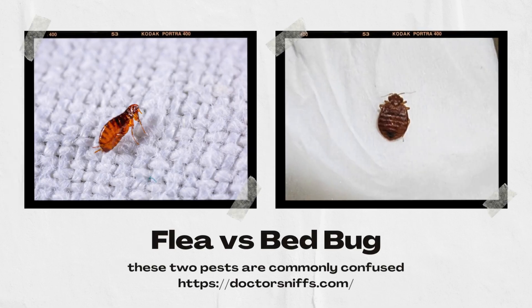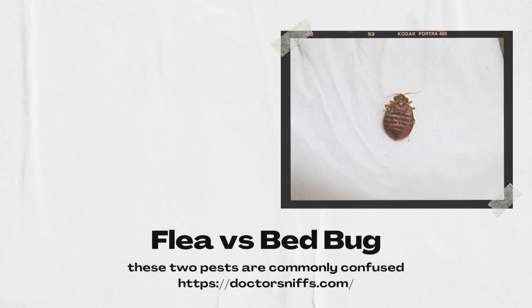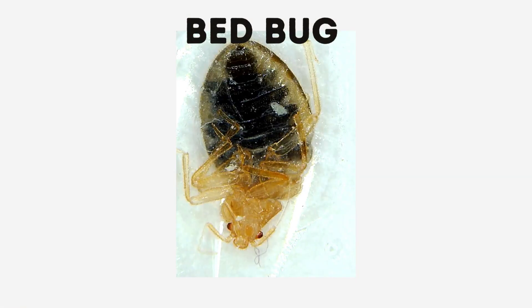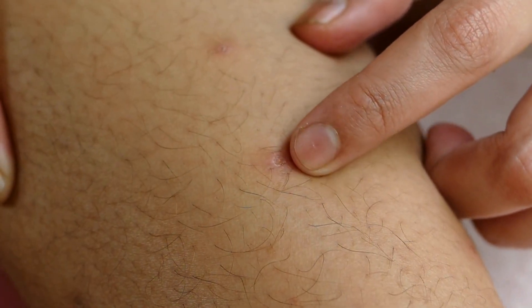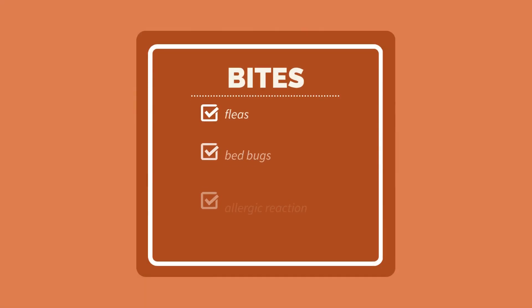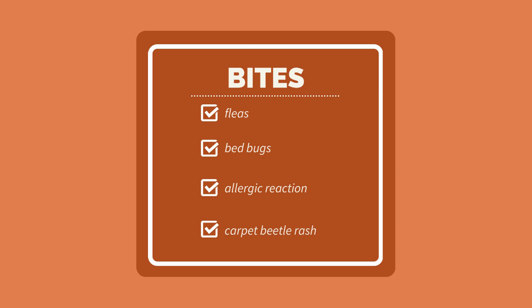If you found a small bug and are not sure if it's a bed bug or a flea, we're here to help. Or if you're getting bites and can't find the culprit, let's get into fleas versus bed bugs. So what are the differences between these two parasitic insects? If you're getting bite-like reactions, there's a good chance you've got fleas, bed bugs, mites, an allergic reaction, or some other pest.